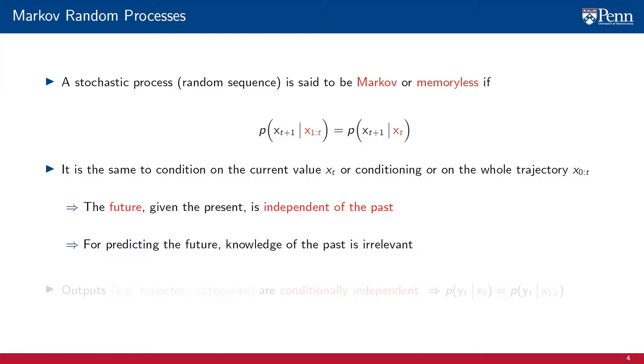Put differently, if we are interested in the future trajectory of the system, it suffices for us to know the value at the present point in time. If we are also giving information about the past trajectory of the system, it doesn't alter our prediction of the future.